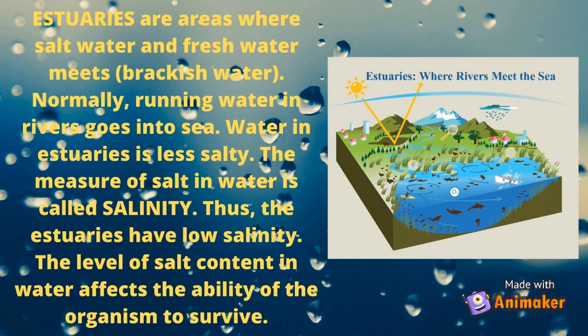Estuaries are areas where salt water and fresh water meet, also known as brackish water. Normally, running water in rivers goes into the sea. Water in estuaries is less salty. The measure of salt in water is called salinity. Thus, the level of salt content of water affects the ability of organisms to survive.